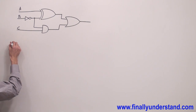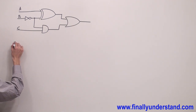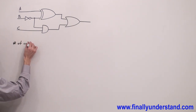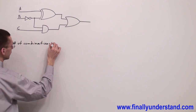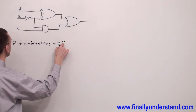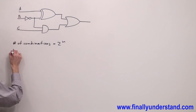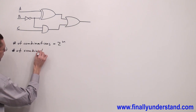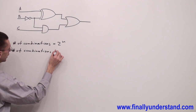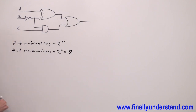We have to find out how many combinations we are going to apply to the circuit. The formula says number of combinations is equal to 2 to the n, where n is the number of variables. We have three variables, so the number of combinations at the inputs is 2 to the third, which equals eight.